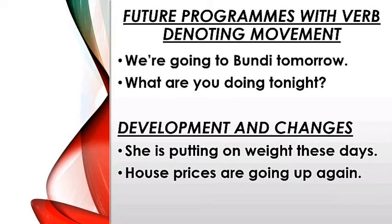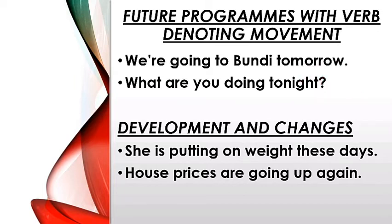We use present continuous tense in future programs with verbs denoting movement. Look at these sentences. We are going to Boondi tomorrow — kal jaane ka plan hai, bhavishy kaal mein present continuous use kar rahe hain. Near future hai. What are you doing tonight? Aaj raat ko near future mein aap kya kar rahe ho — ismein bhi present continuous ka use kiya jata hai.